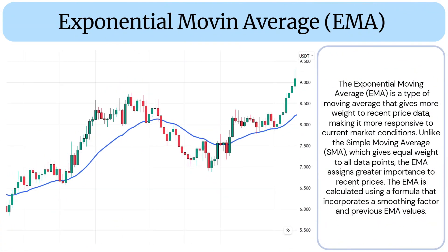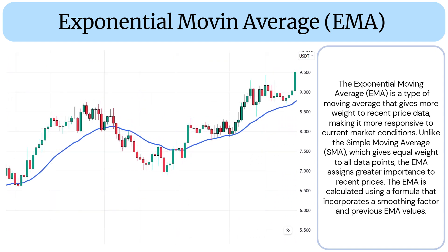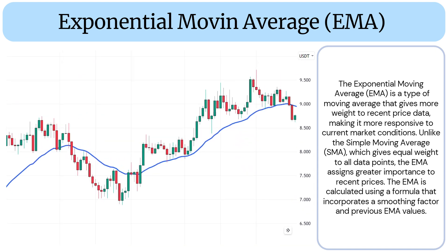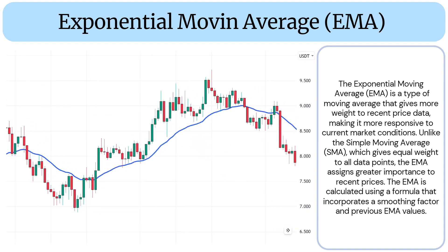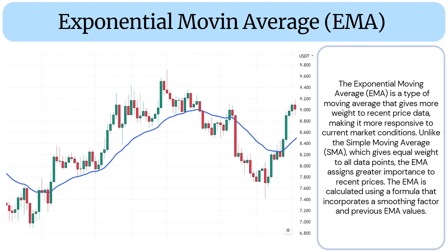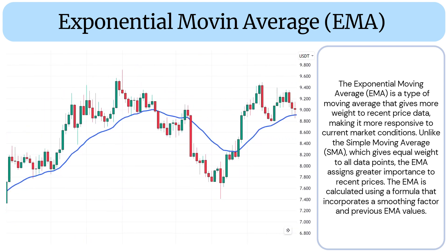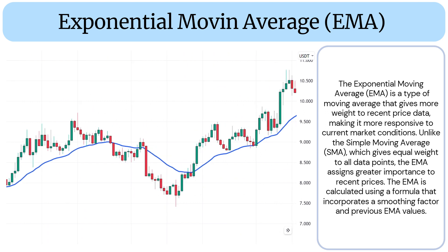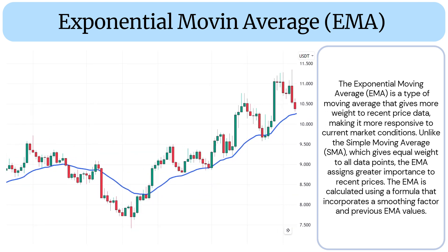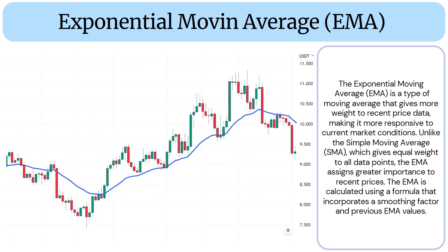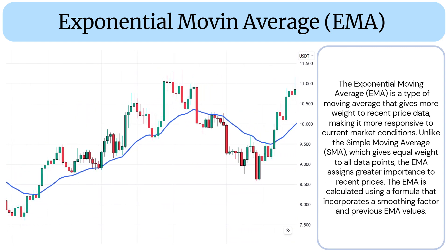The Exponential Moving Average (EMA) is a type of moving average that gives more weight to recent price data, making it more responsive to current market conditions. Unlike the Simple Moving Average (SMA), which gives equal weight to all data points, the EMA assigns greater importance to recent prices.